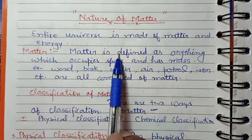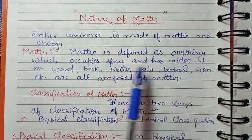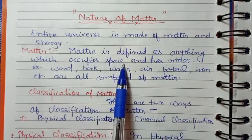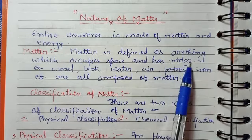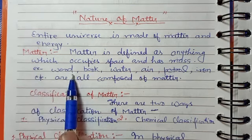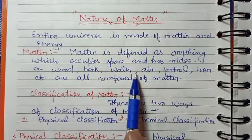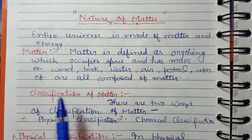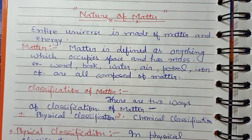What is matter? Matter is defined as anything which occupies space and has mass. Any substance that occupies space and has mass and weight — that is matter. Examples: wood, book, water, air, petrol, iron, etc. — all are composed of matter. They occupy space and have mass.